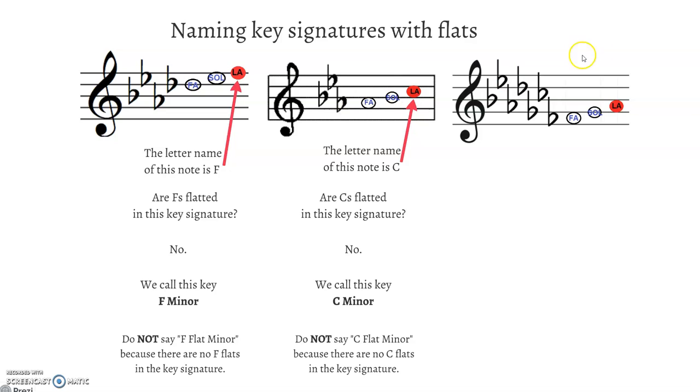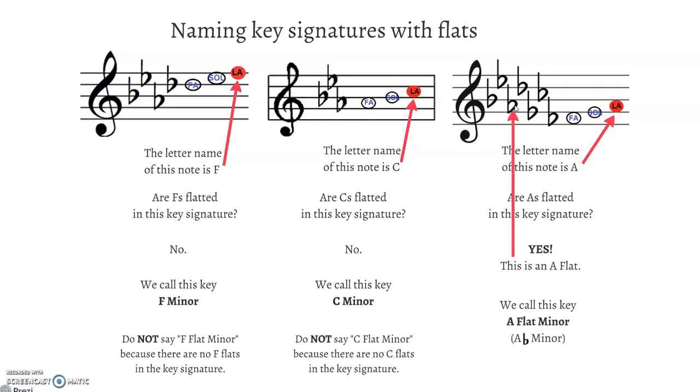Last example. Here we go. There's our La. That's an A. Go to the key signature. Are A's flatted? Well, a whole lot of things are flatted. B E A D Grandma's Chicken Farm. So yes, A's are flatted. So we're going to call this A flat minor. The end.